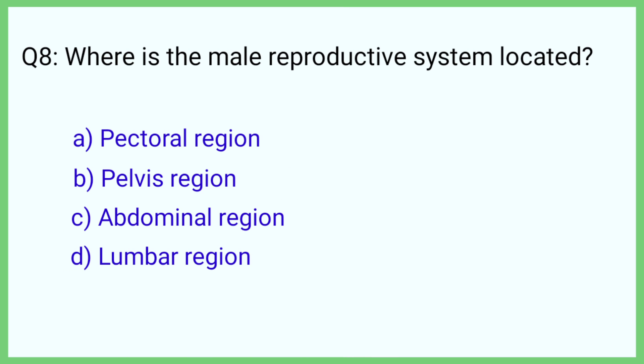Question number 8. Where is the male reproductive system located? The correct answer is option B: Pelvis region.